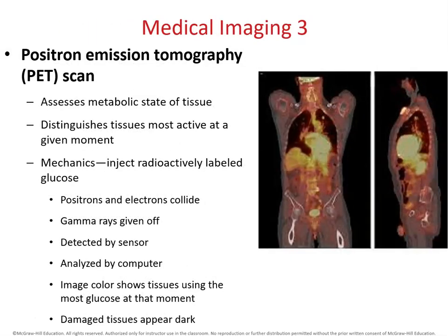PET scans — positron emission tomography — are really, really good for detecting cancer. What a PET scan does is visualize areas of the body that are doing metabolism very quickly. We know that cancer metabolizes sugars very quickly, so a PET scan is used to locate tissues doing fast metabolism. Those are often assumed to be cancer if the scans look different from a known healthy patient. It's analyzed by a computer and shows where glucose is being used at the moment the scan is done.